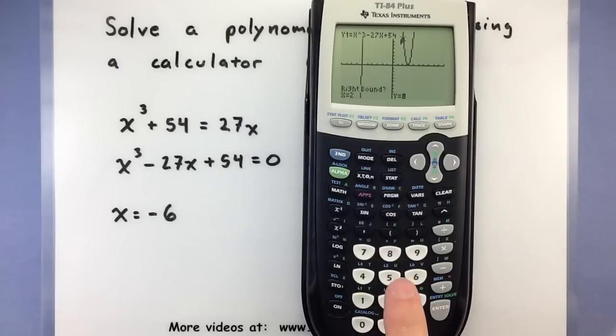For the right bound, I will choose, let's go with 5, somewhere on the right. And let's see, somewhere in between those, let's use 3.5.